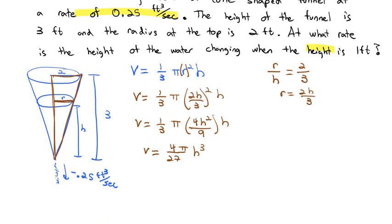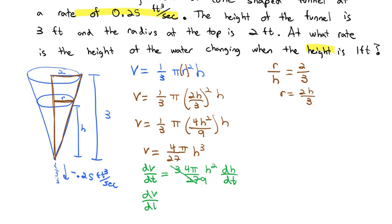Now that we have our formula connecting the variables, we'll take the derivative. The derivative of v is dv/dt. The constant 4π/27 stays, and the derivative of h³ brings the 3 out front, giving h², times dh/dt. Simplifying: 3 over 27 is 9, so dv/dt equals (4π/9) h² dh/dt.